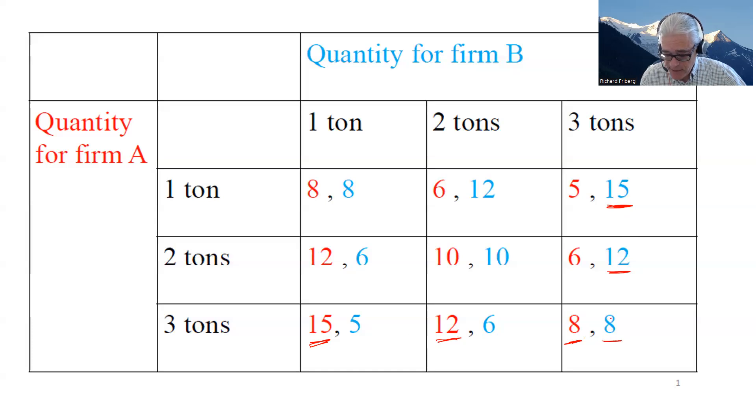So here we have two underlying strategies. We have what we call a Nash equilibrium. So a set of strategies where none of the firms, none of the players would want to unilaterally deviate from this. So if they could jointly agree, they would prefer to be here. But in the non-cooperative game, it's a dominant strategy for them to each produce three tons. So that's the Cournot equilibrium or Nash in quantities, as we would also say.